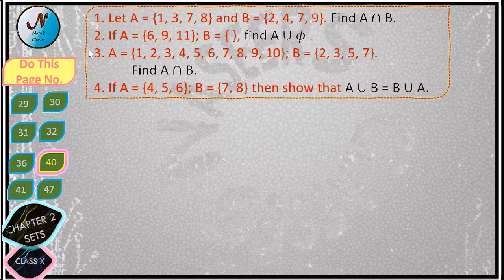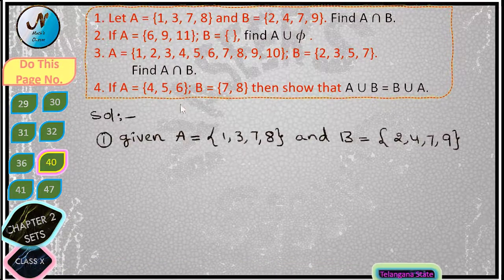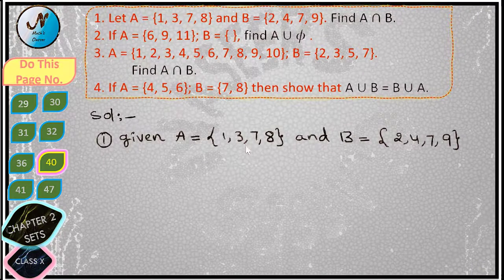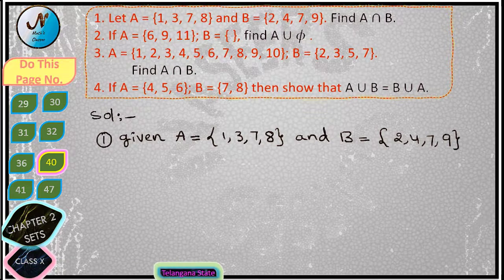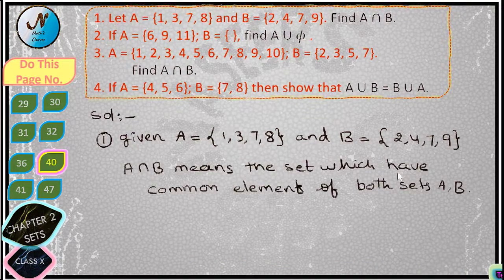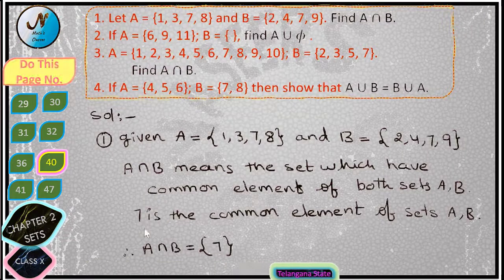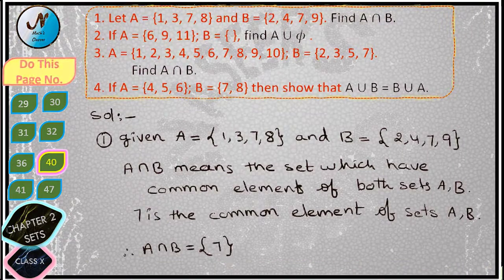We are going to solve page number 40, chapter two: Sets. Four problems are given, we solve them one by one. First, we write the given sets: A is equal to {1, 3, 7, 8} and B is equal to {2, 4, 7, 9}. We already know that A intersection B means the set which has common elements of both sets A and B. Here, 7 is the common element, so A intersection B is equal to {7}.